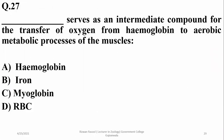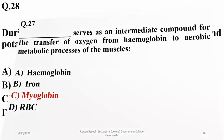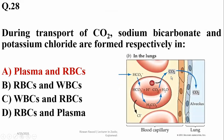Question twenty-five: myoglobin serves as the intermediate compound for the transfer of oxygen from hemoglobin to aerobic metabolic processes in the muscles. For transport of CO2, sodium bicarbonate and potassium chloride are formed respectively in plasma and red blood cells.